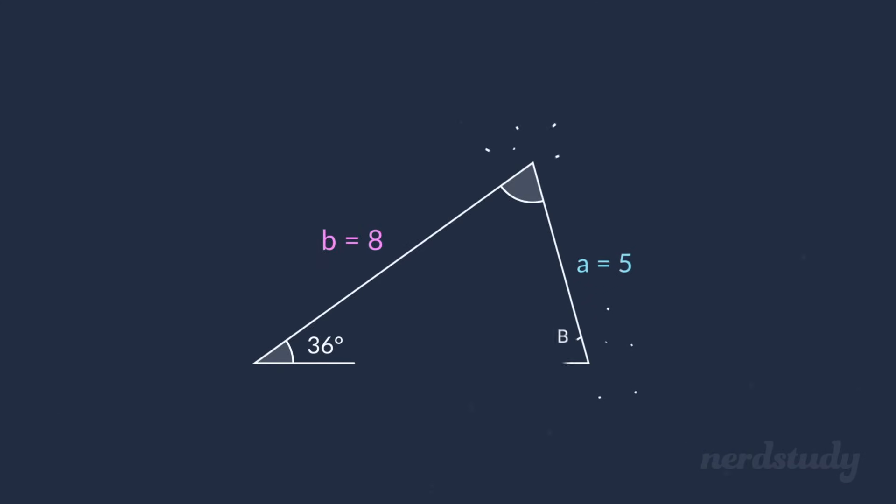Let's say that we're given the following triangle. First of all, even though the triangle is drawn for us, and even though it's probably okay to assume that this triangle does exist, let's go ahead and check for it just in case.